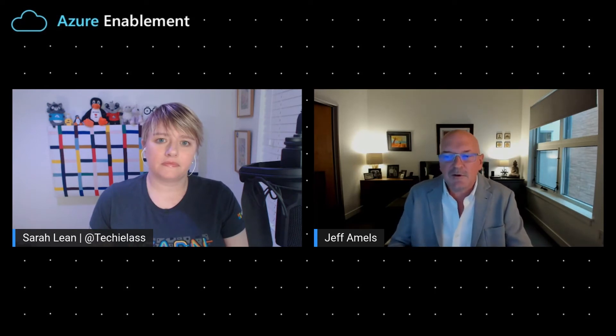Business cycles of utilization fluctuate depending on industry verticals. In the retail industry, for example, you have four to six spikes per year where data center resources are at max capacity, while the rest of the time they're completely underutilized — sometimes at only 20 to 30% utilization, even with core allocations. The cloud shifts the model towards dynamic allocation of capacity versus that static allocation. That really comes into three categories: infrastructure as a service, platform as a service, and software as a service.